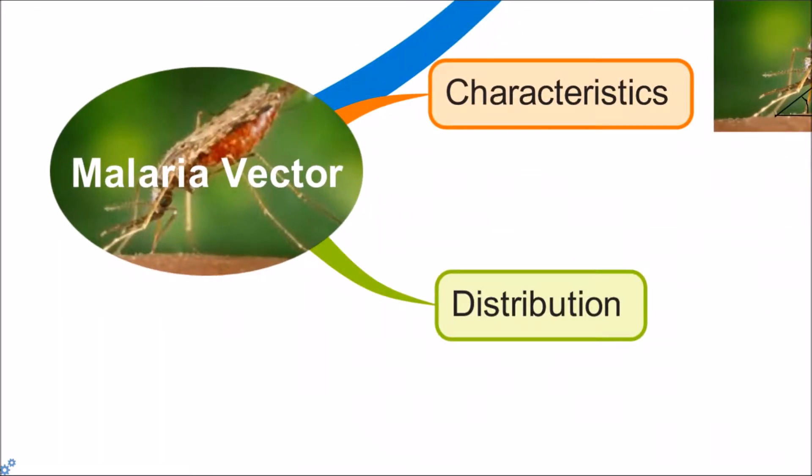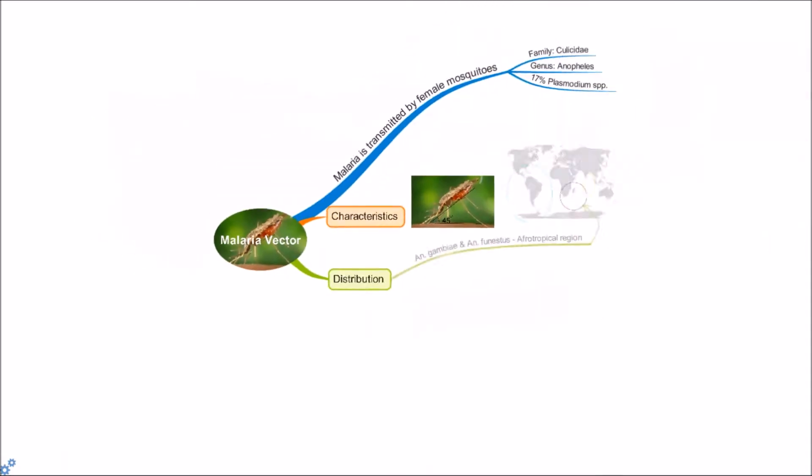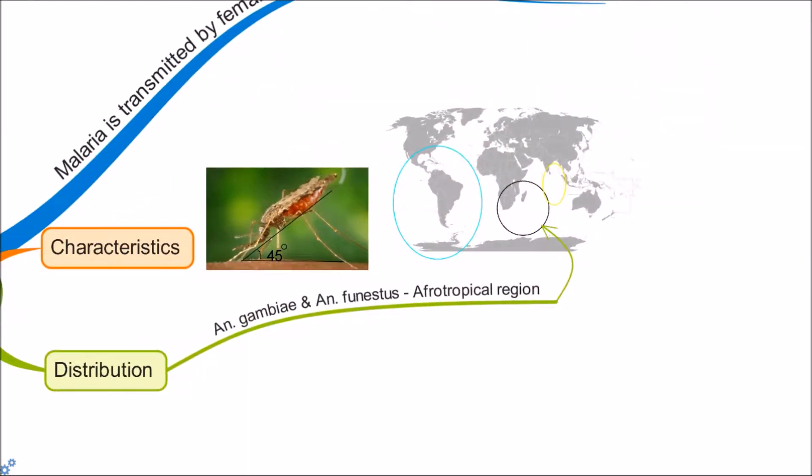Distribution. Malaria vectors are widely distributed with different species occupying different regions. For example, in Afrotropical regions there are Anopheles gambiae and Anopheles funestus.